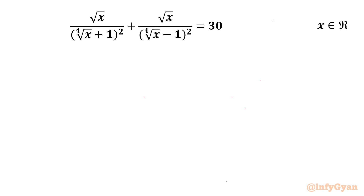Welcome back to Infigyan, my dear friends. In today's video we are having one very interesting rational equation problem. It is: the square root of x over the fourth root of x plus one, whole square, plus the square root of x over the fourth root of x minus one, whole square, equal to 30.